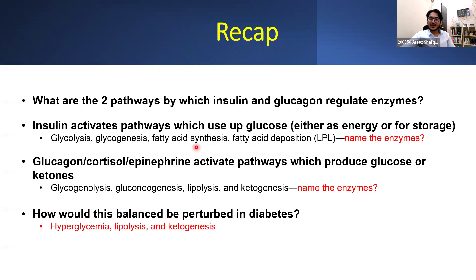And fat deposition in lipoproteins is because insulin activates lipoprotein lipase at the gene level. On the other hand, the counter-regulatory hormones activate pathways which produce glucose or produce ketones. So they activate glycogen breakdown by activating glycogen phosphorylase. They activate gluconeogenesis. They activate lipolysis by activating hormone-sensitive lipase. And they activate ketogenesis.